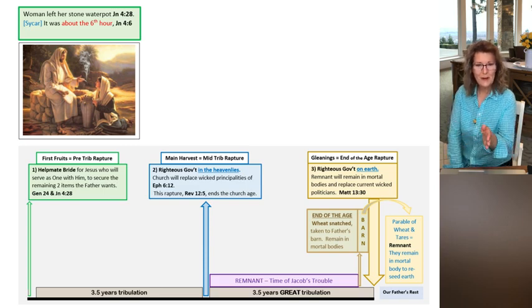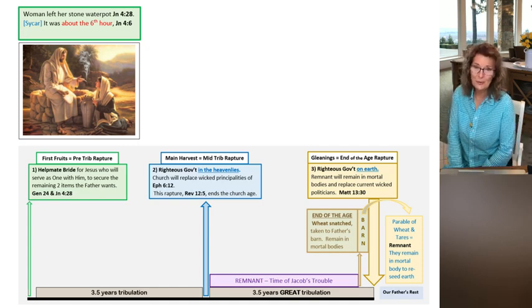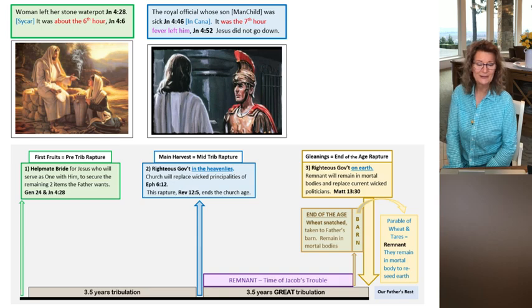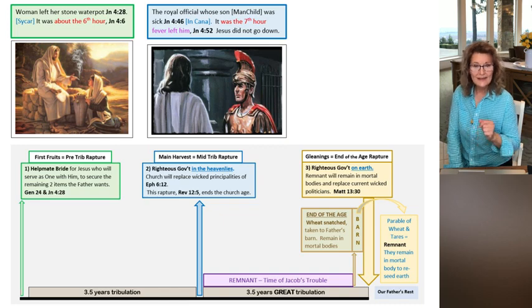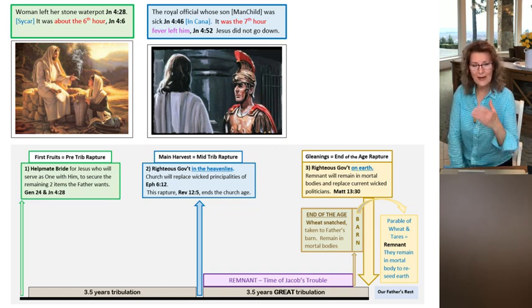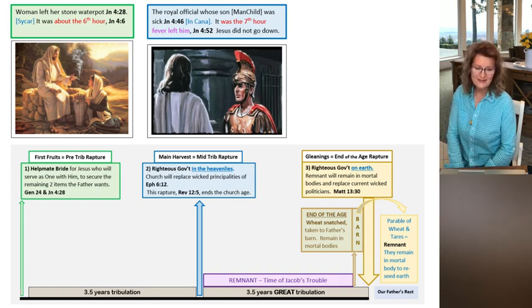Then at the mid-trib rapture, what was Jesus's next interaction after the woman at the well? A royal official, as the New American Standard Bible describes, came to Jesus in Cana, interceding for His Son—the man-child that's raptured in Revelation 12:5.